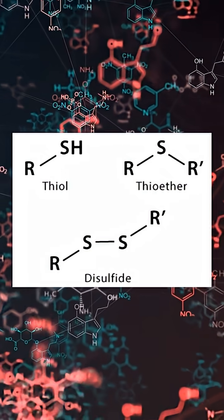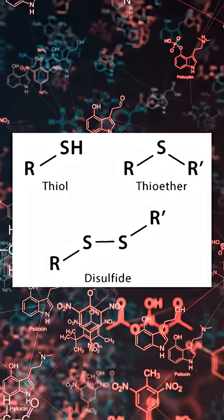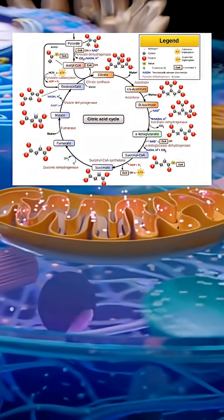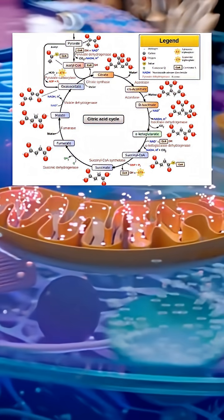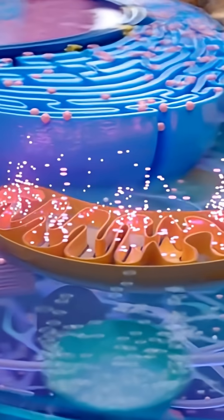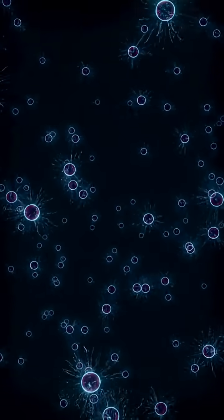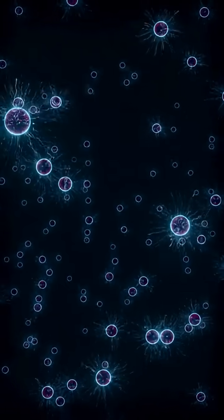They bind tightly to sulfur-containing groups in enzymes inside the mitochondria. This blocks pyruvate dehydrogenase and disrupts the electron transport chain. ATP production collapses. Cells don't die violently—they run out of energy and shut down from the inside.